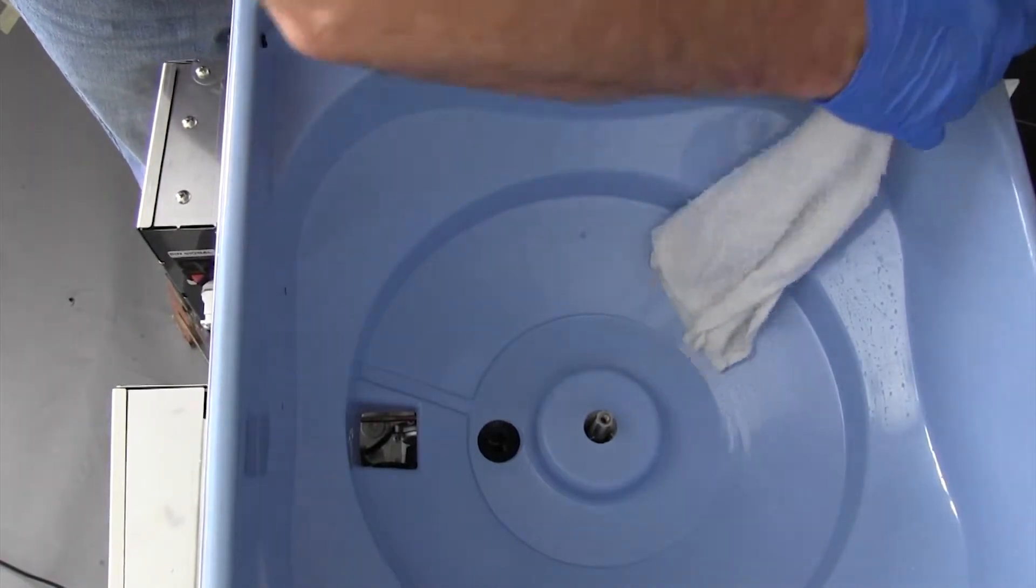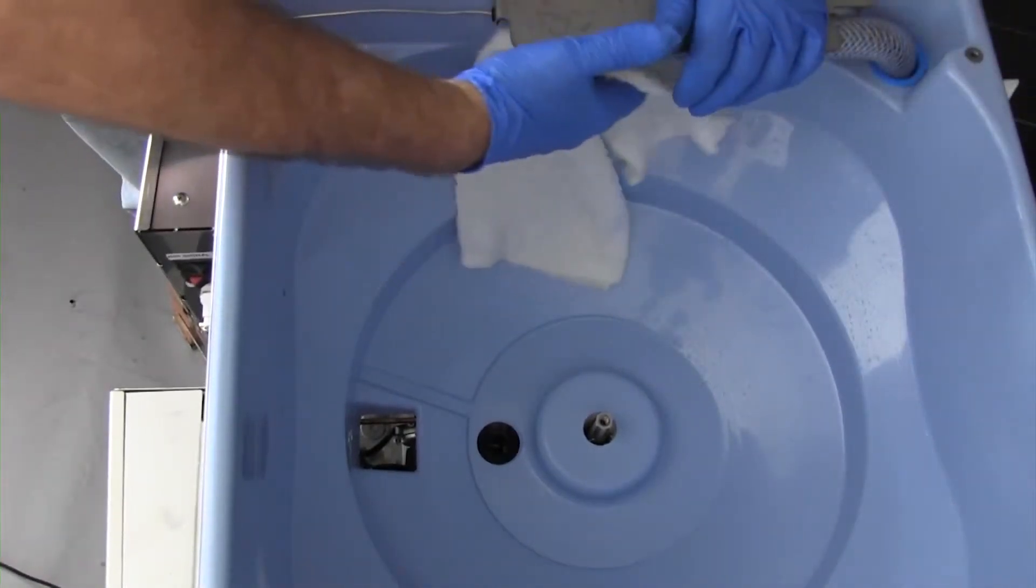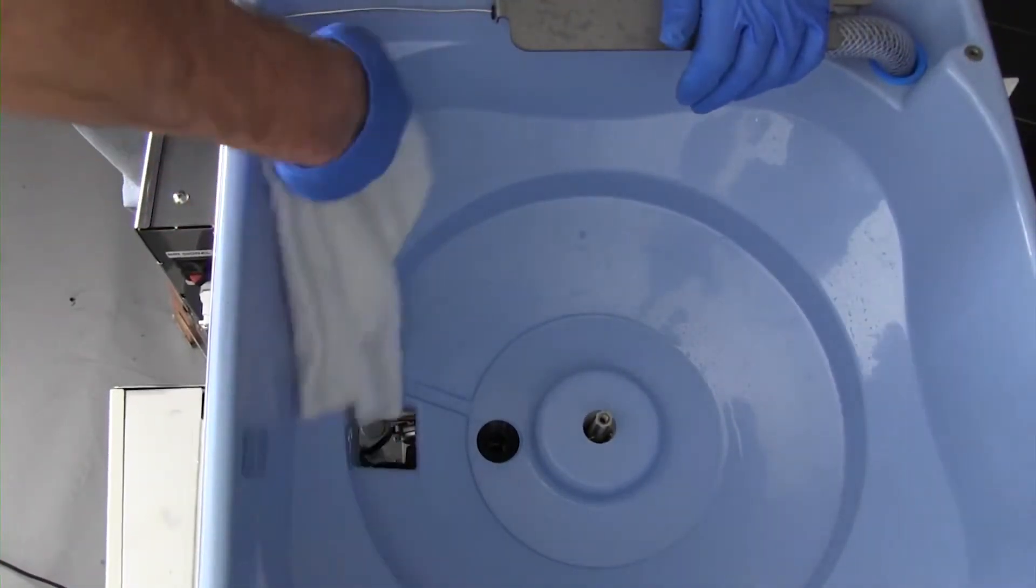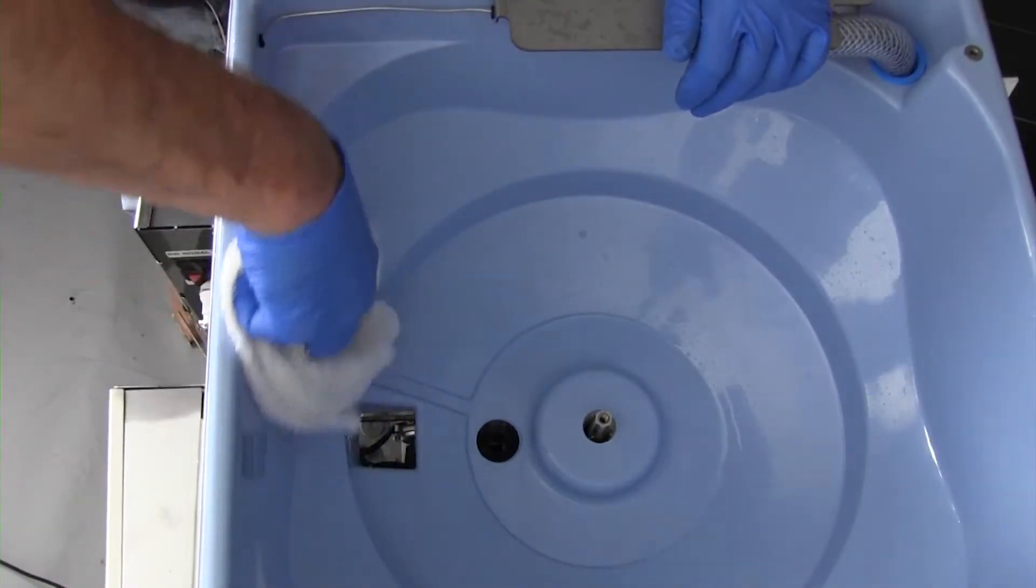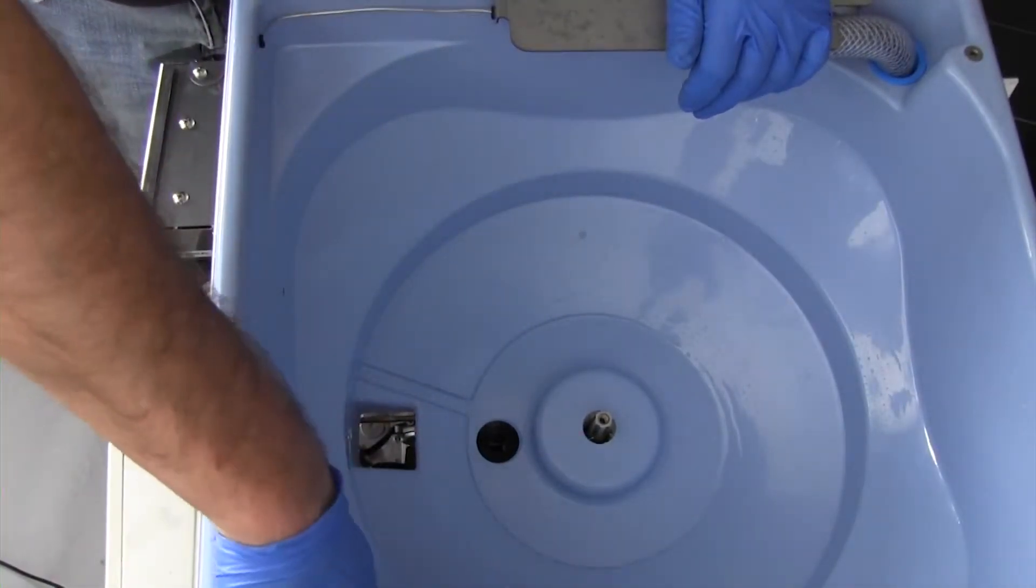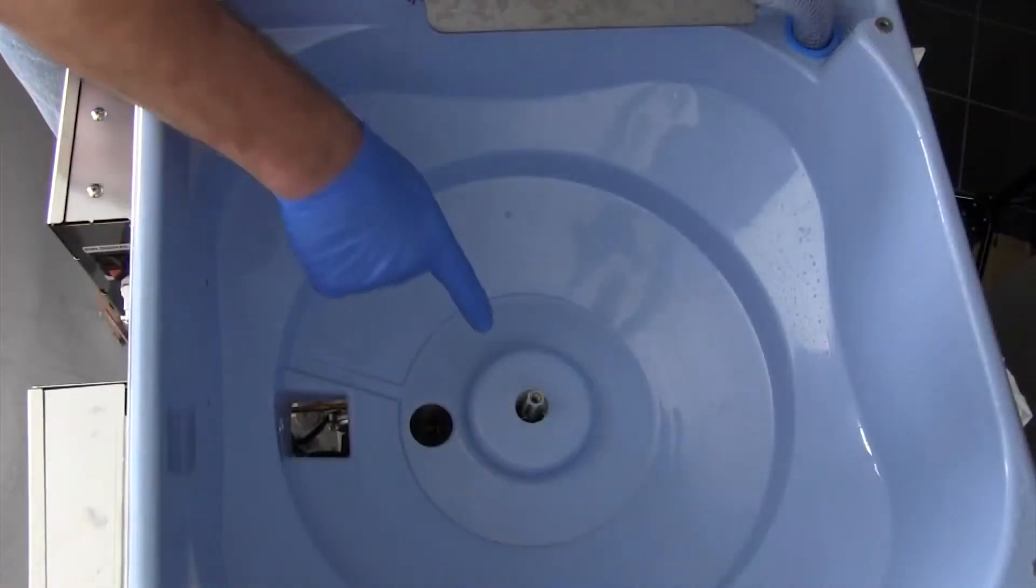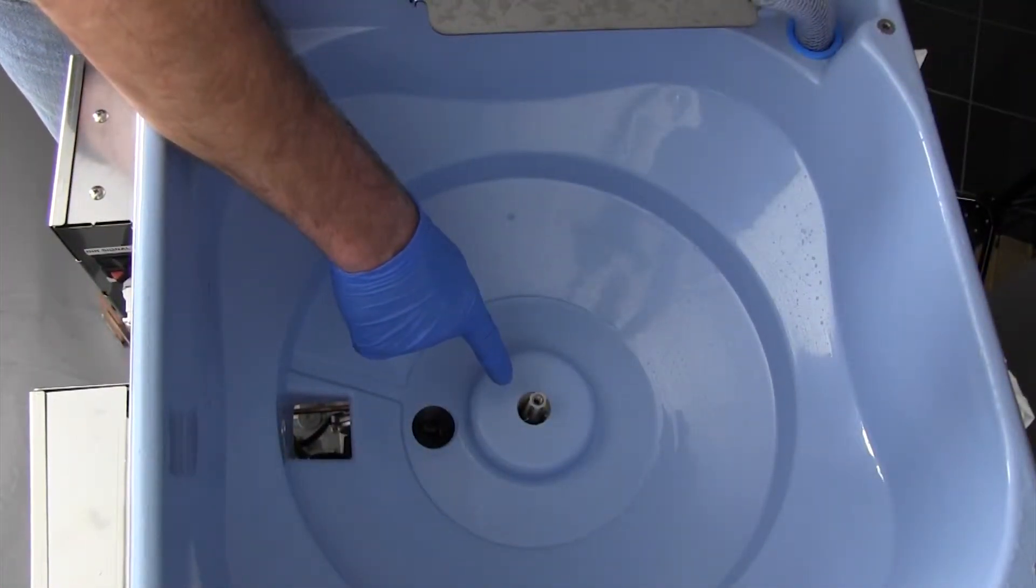To complete dispenser cleaning, use a damp cloth with fresh water to rinse all surfaces thoroughly. Be careful not to damage the ice dispense motor by allowing excess water to run down the motor shaft hole at the bottom of the hopper.